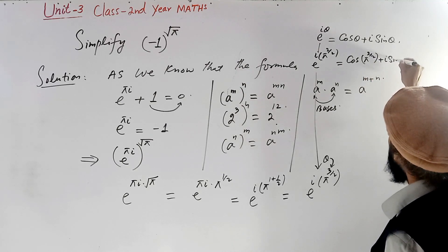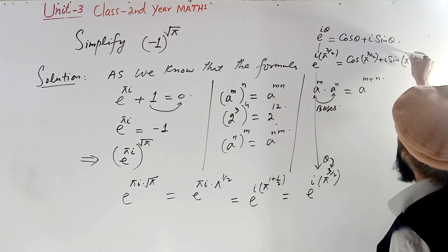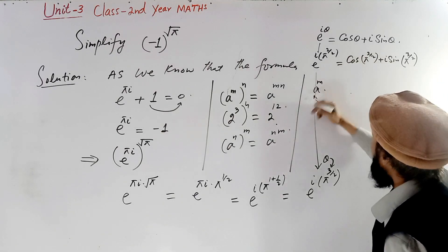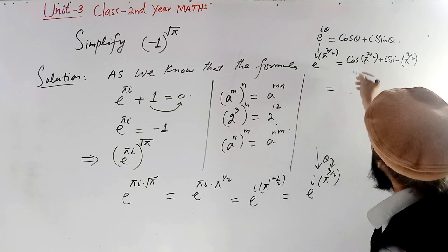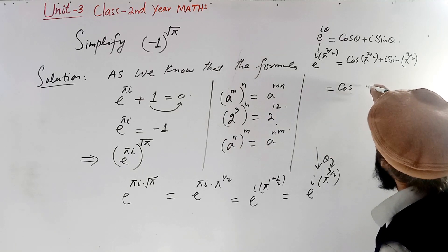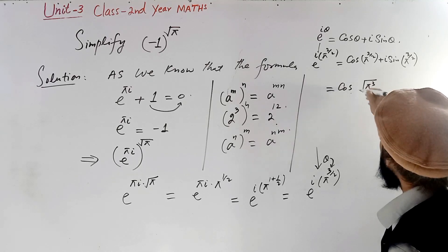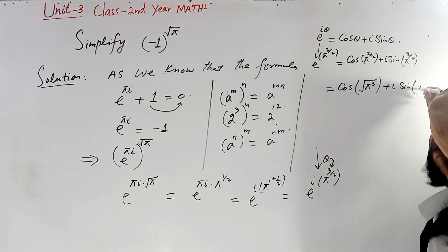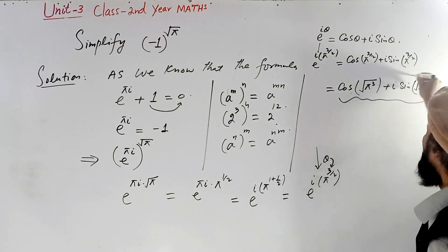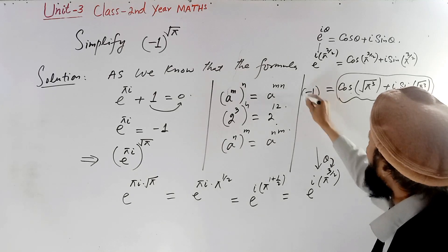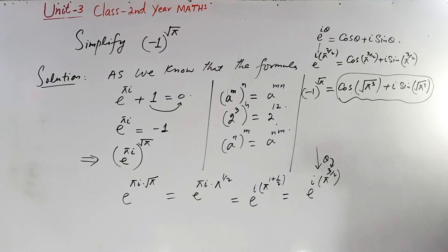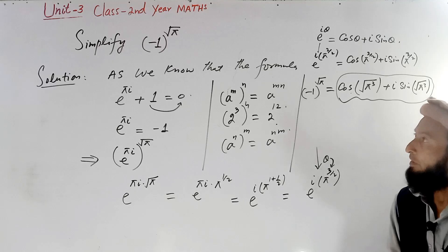We change this to index form. The final answer is: cos(pi^(3/2)) plus i times sin(pi^(3/2)), where pi cube under the root appears in both terms. This is the answer to the question (-1) raised to the square root of pi — the Harvard University interview question.